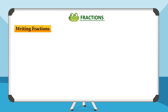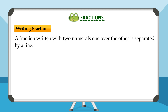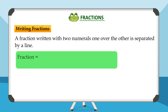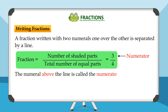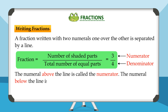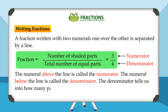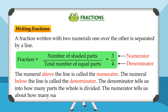Writing fractions: A fraction is written with two numerals, one over the other, separated by a line. Fraction equals number of shaded parts upon total number of equal parts, which is equal to three upon four. The numeral above the line is called the numerator. The numeral below the line is called the denominator. The denominator tells us into how many parts the whole is divided. The numerator tells us how many such parts are taken or considered.